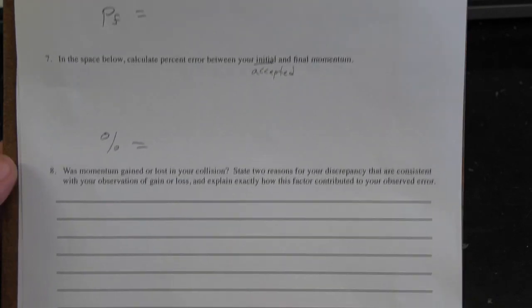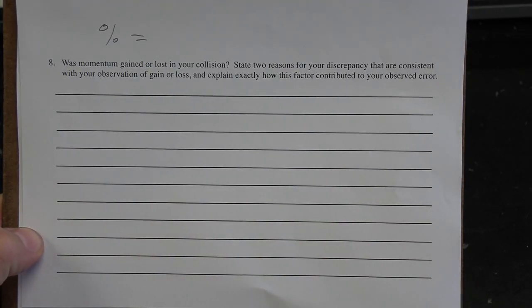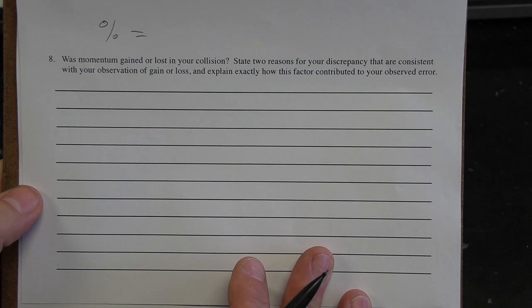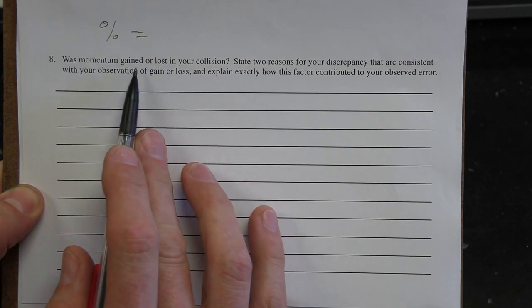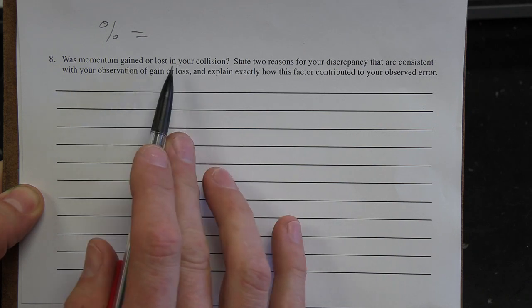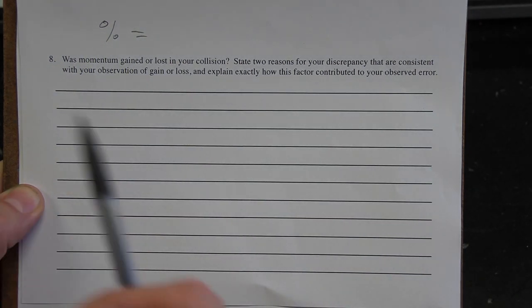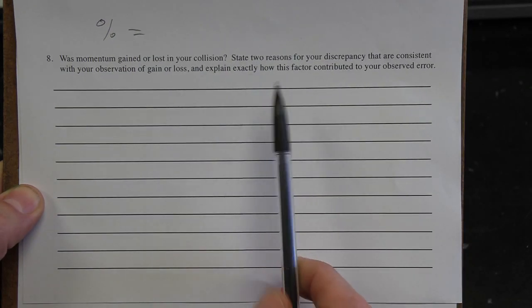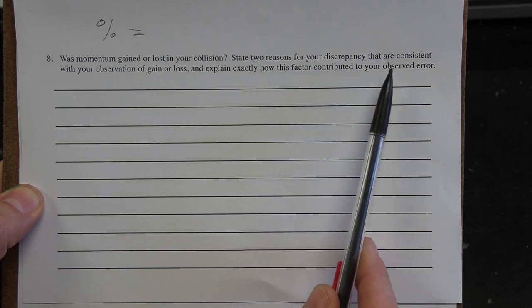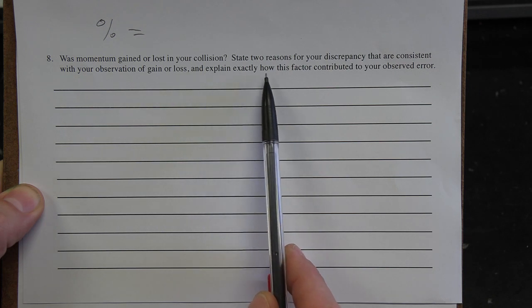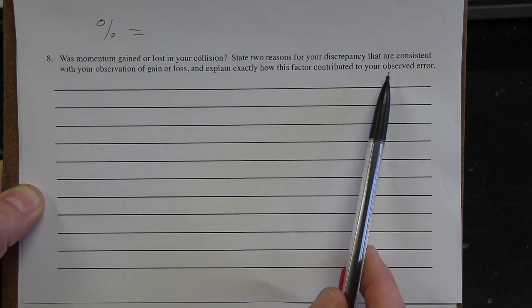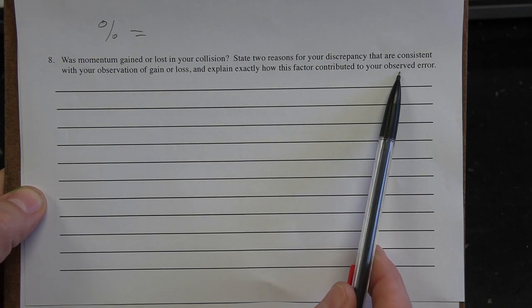Okay, the last question. The question reads, was momentum gained or lost in your collision? Now, of course, it should not be gained or lost. It should be conserved. They should be equal. Chances are it won't be. So here's what you have to do. You have to state two reasons for your discrepancy that are consistent with your observation of gain or loss. And explain exactly how this factor contributed to your observed error.